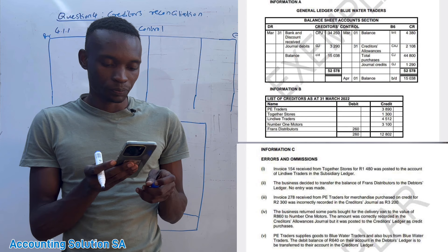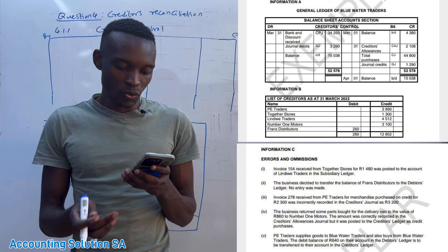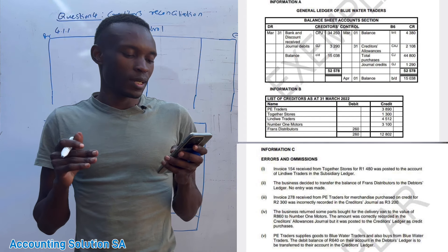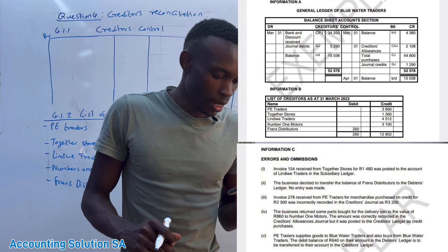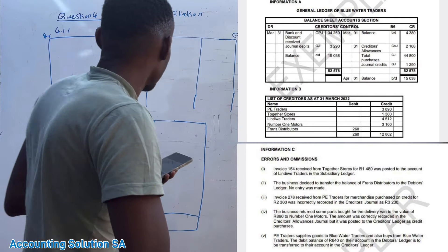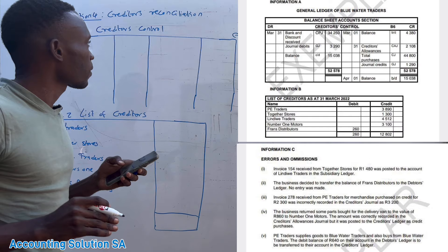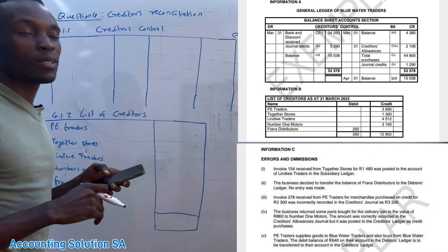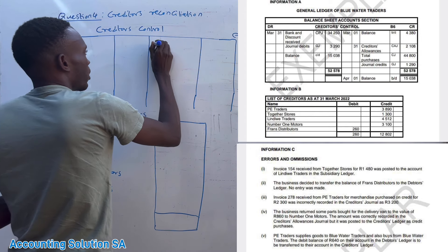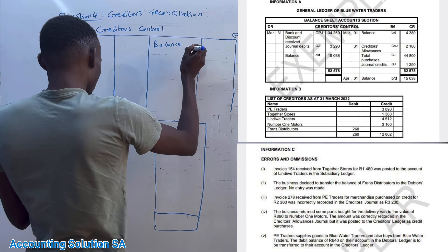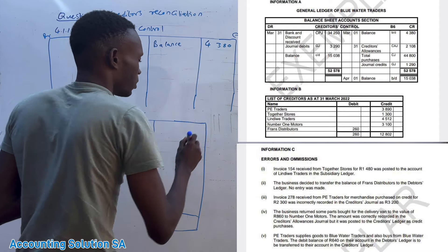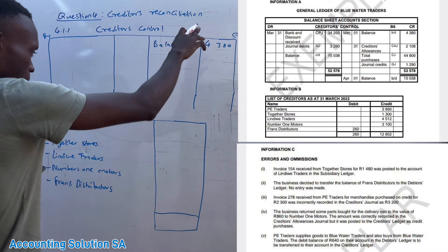Before we go to the additional information, let's start with the simplest marks you need to get. The opening balance — remember creditors control is a liability, and liability increases on the credit side, so your balance must always be on the credit side. We just copy the opening balance as 4,308. One mark for that.